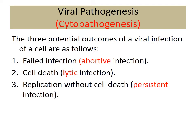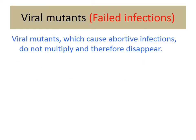There are three potential outcomes of viral infection at the cellular level. Number one is failed infection — the virus is aborted and nothing happens. Number two is a lytic infection — the virus enters your cell and causes a limited infection. Number three is persistent infection — the virus replicates in your cell without killing it. These three are abortive, lytic, and persistent infection.